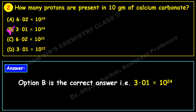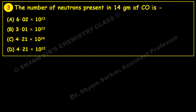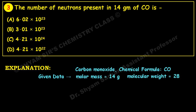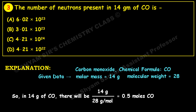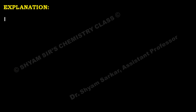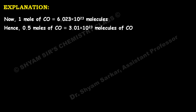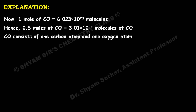Next question: the number of neutrons present in 14 grams of CO — four options are given. CO is carbon monoxide; molar mass given is 14 grams and molecular weight is 28. Moles = 14 ÷ 28 = 0.5 moles of CO. One mole of CO equals 6.023 × 10²³ molecules, so 0.5 moles equals 3.01 × 10²³ molecules of CO.